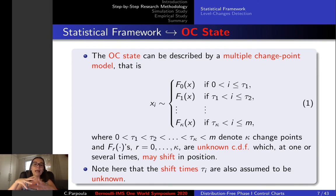Where f0x, f1x, fkx denote the unknown CDF which at one or several times may shift in position, and tau1, tau2, tau kappa represent the shift times which are also assumed to be unknown.